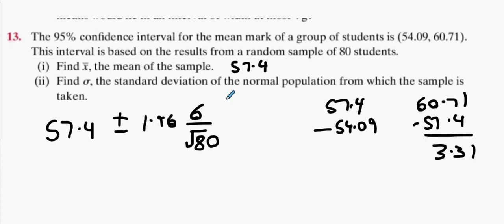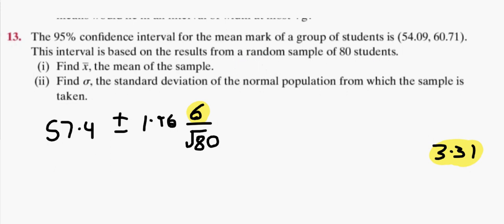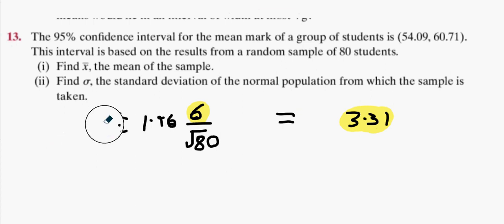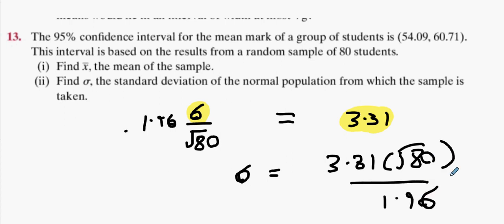What's our n value? 80. We know that 1.96 sigma over root 80 equals 3.31 because the error is plus or minus 3.31. Let's isolate the sigma value. Sigma equals 3.31 multiply by root 80 and divide that answer by 1.96. Did anybody get a standard deviation of 15.1?